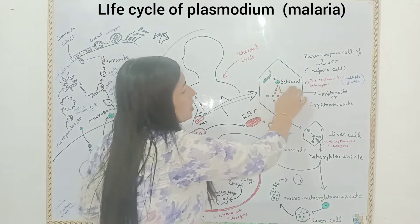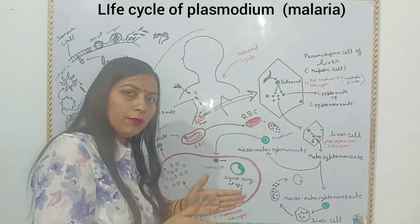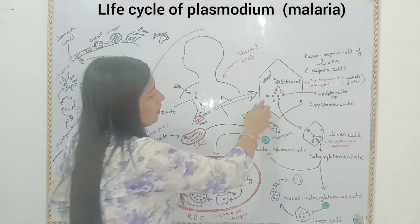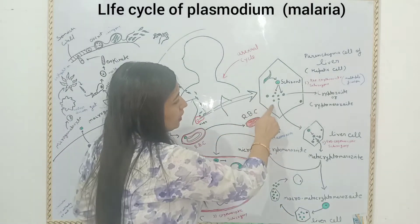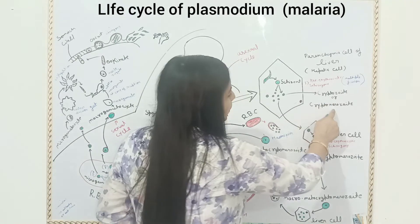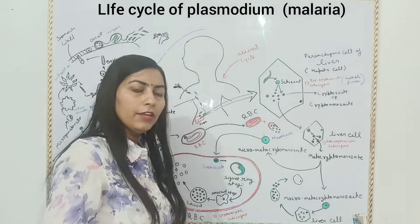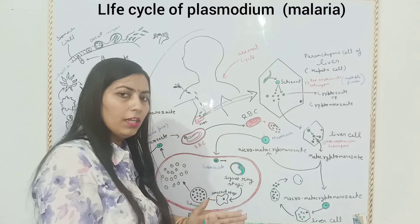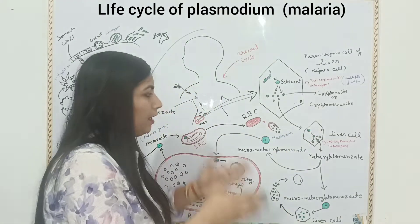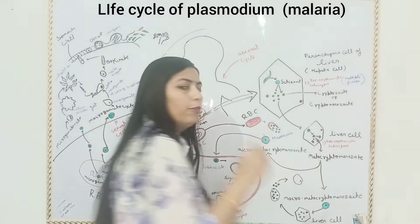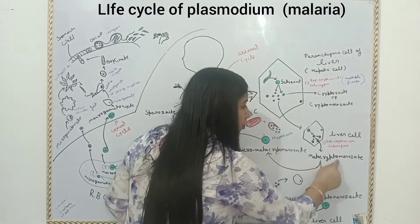This is now known as a schizont. The nucleus of the schizont divides and multiplies asexually. Its nucleus takes cytoplasm and forms a new cell. This new cell is known as Cryptomerozoite. When this Cryptomerozoite enters into another liver cell, it again reproduces asexually. The nucleus multiplies, divides, takes cytoplasm and forms a new type of cell, known as Metacryptomerozoite.